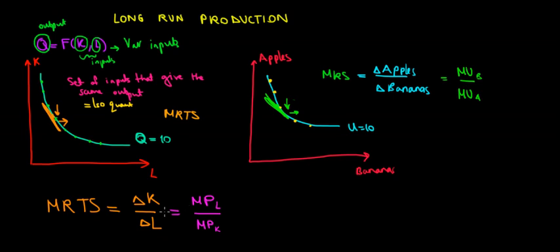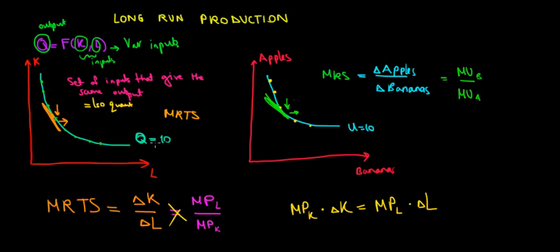If we do the cross product, it shows us that the marginal production from capital times the change in capital must equal the marginal production from labor times the change in labor. Because we're keeping the same production level, the additional production we would forego from giving up capital must be the same as the additional production we gain from increasing labor. We give up a bit of capital — we could have produced something with it — but instead we compensate with the one more unit of labor and the marginal production it provides.